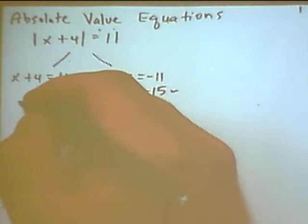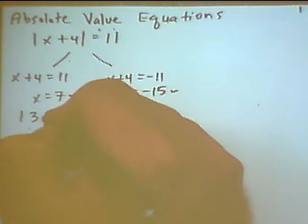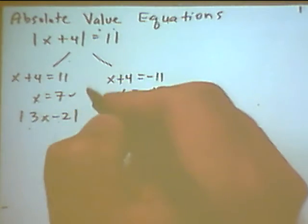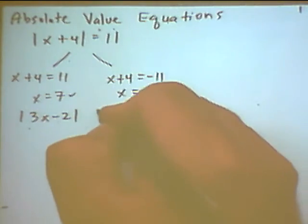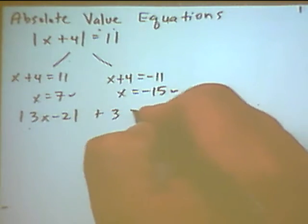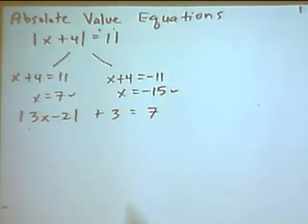Let's look at another problem. 3x minus 2, absolute value, plus 3 equals 7.